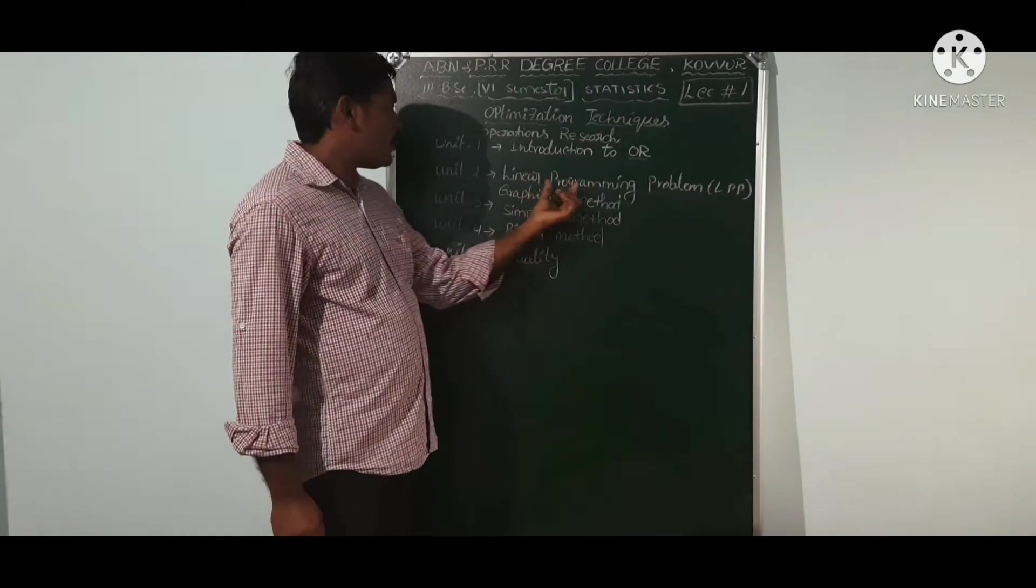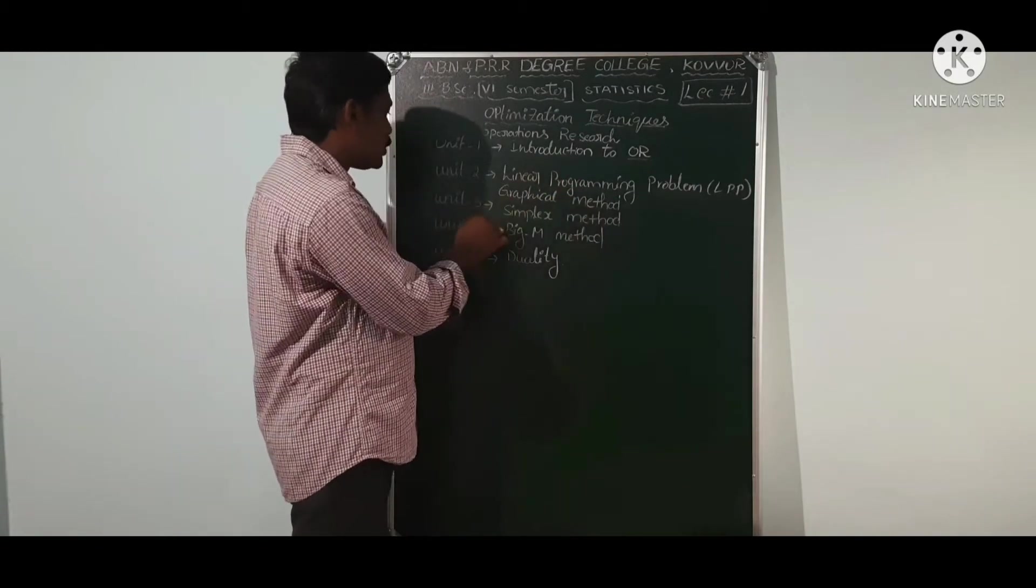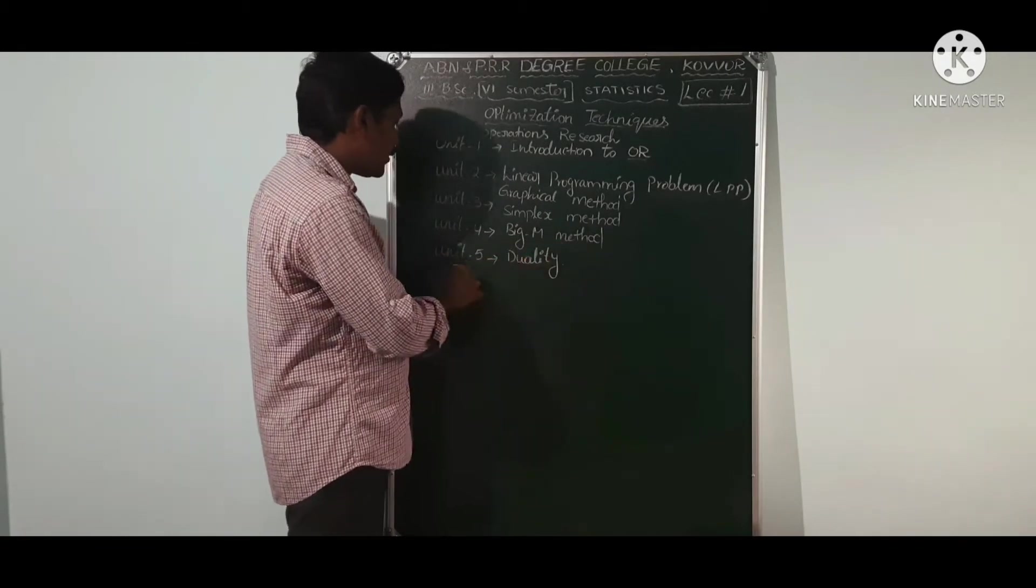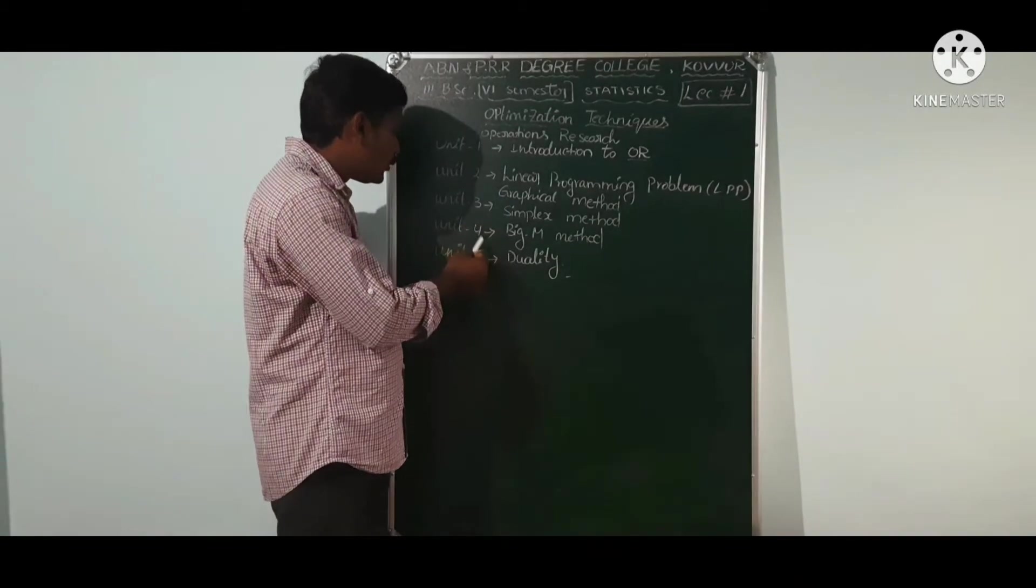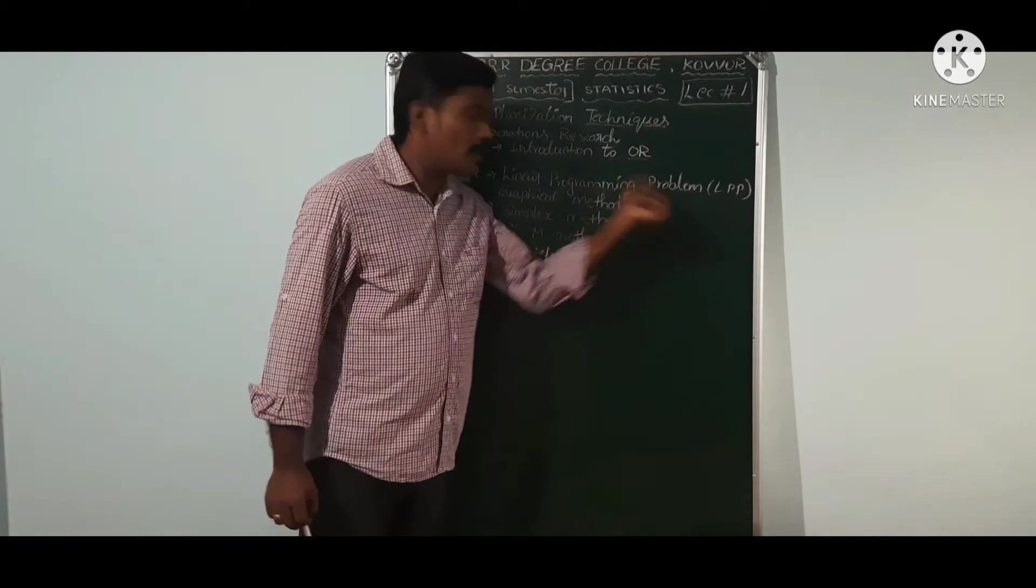Linear Programming Problems have different methods. One is Graphical Method. Unit 3 is Simplex Method. Unit 4 is Big M Method. Unit 5 is Duality. Unit 3, Unit 4, Unit 5 are also Methods of Linear Programming Problems.